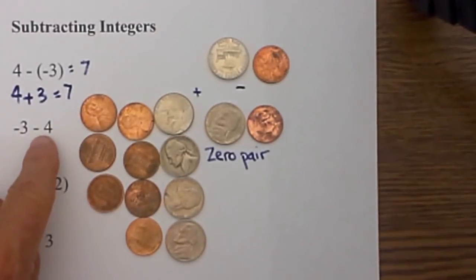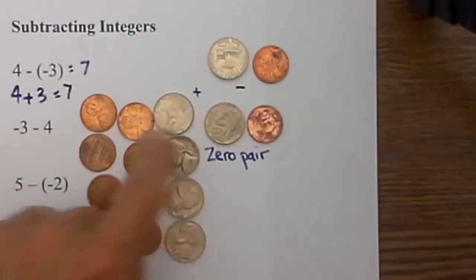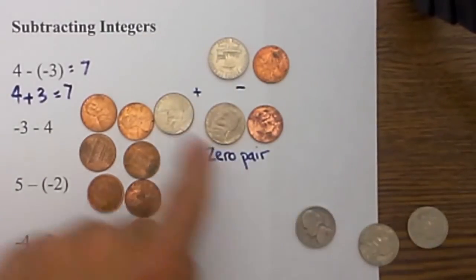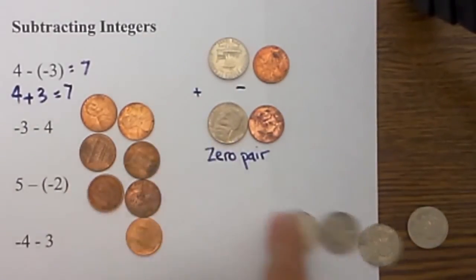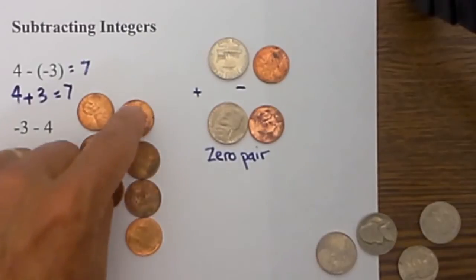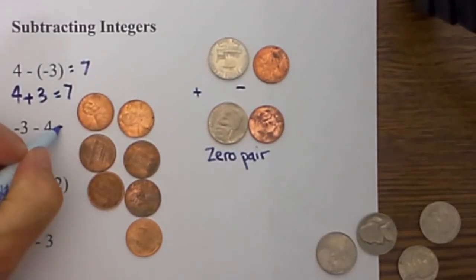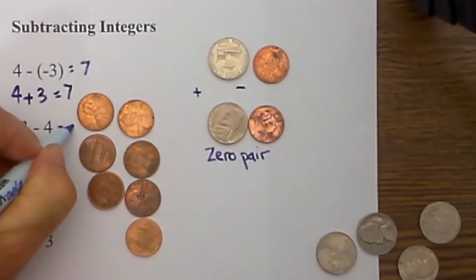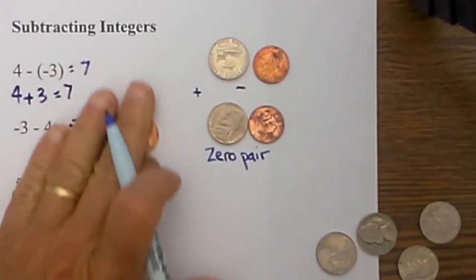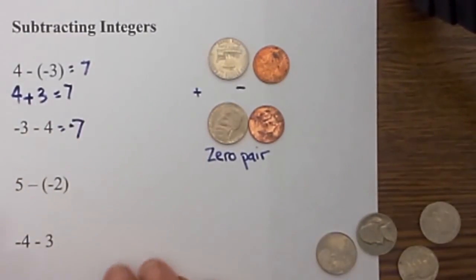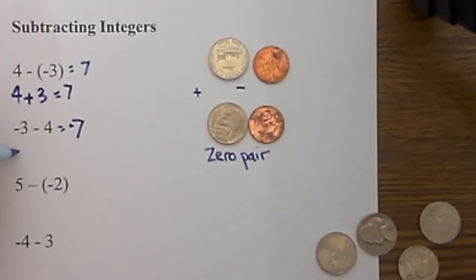Now I subtract four positives — one, two, three, four — and I am left with seven negative numbers. Negative seven. If you haven't picked up on it by now, I prefer this second method, but you can use either one.